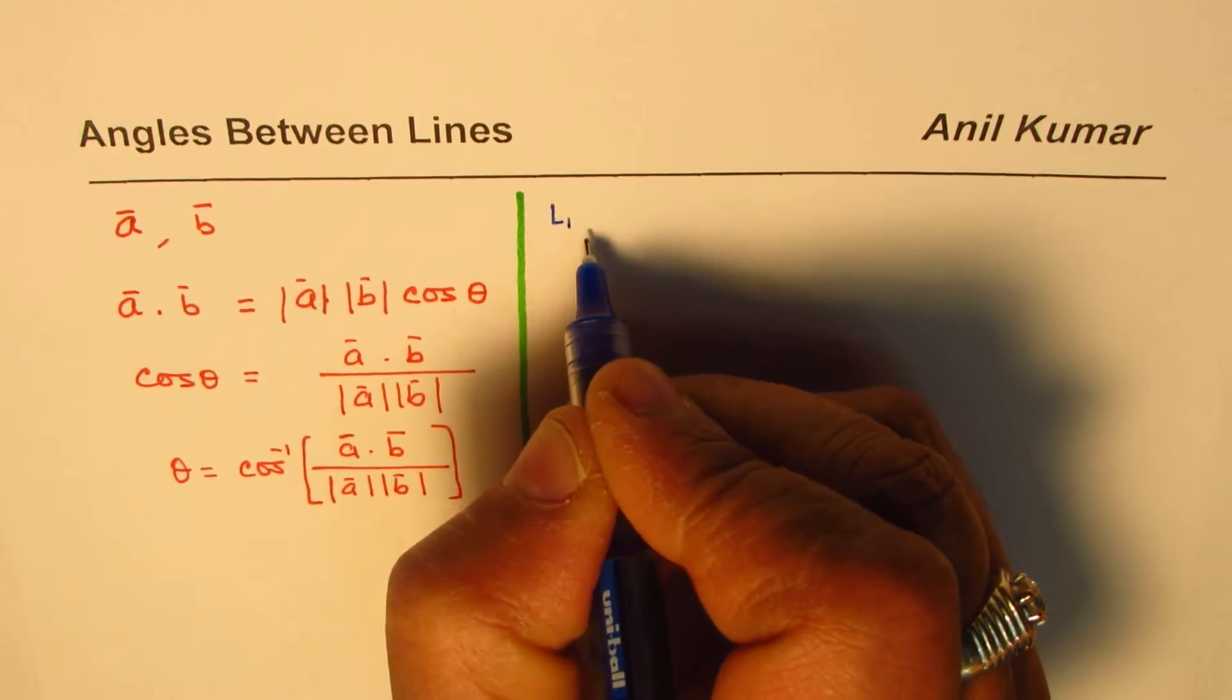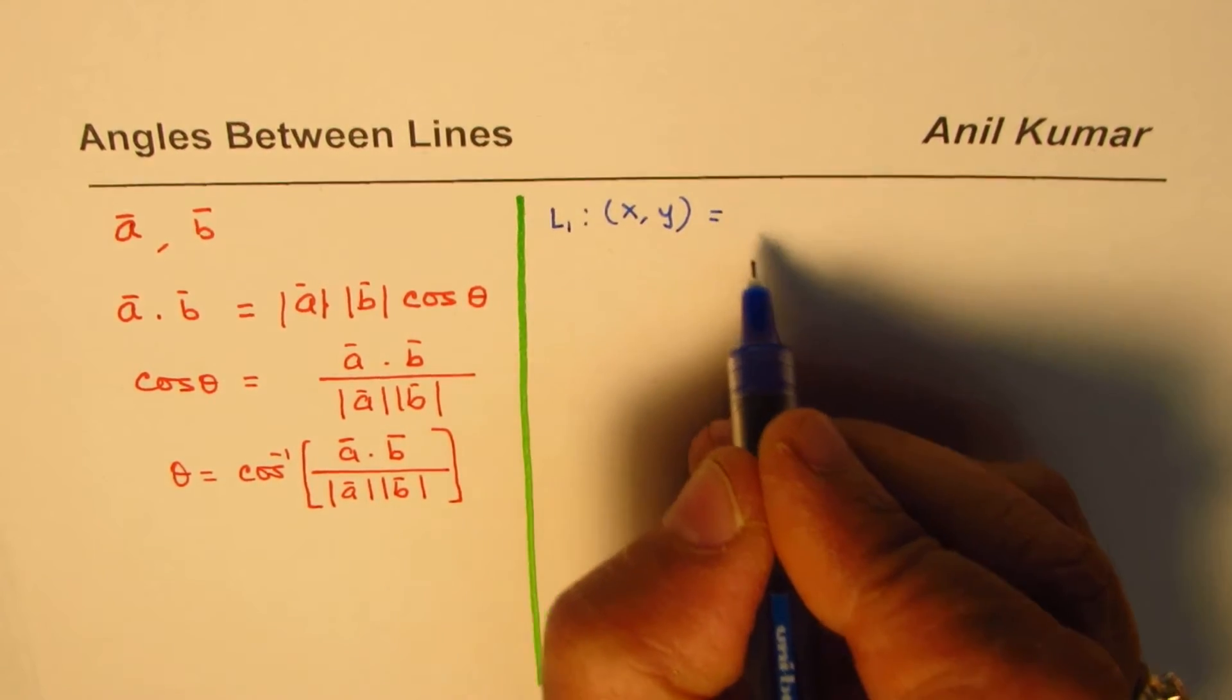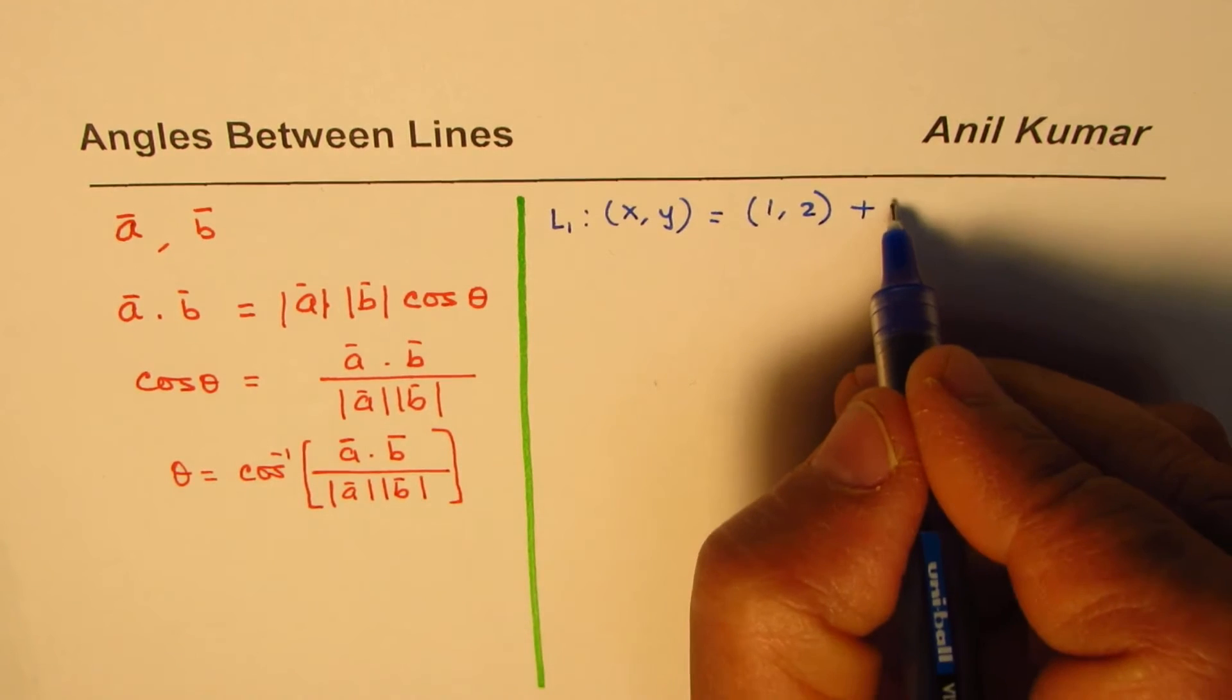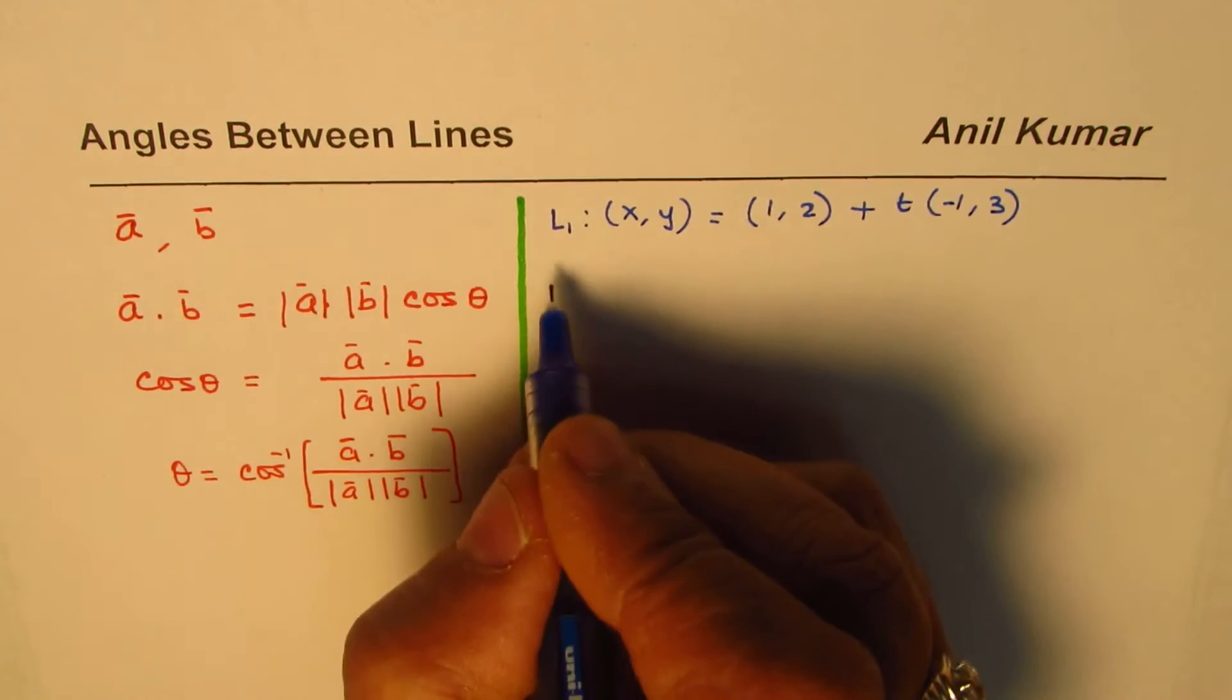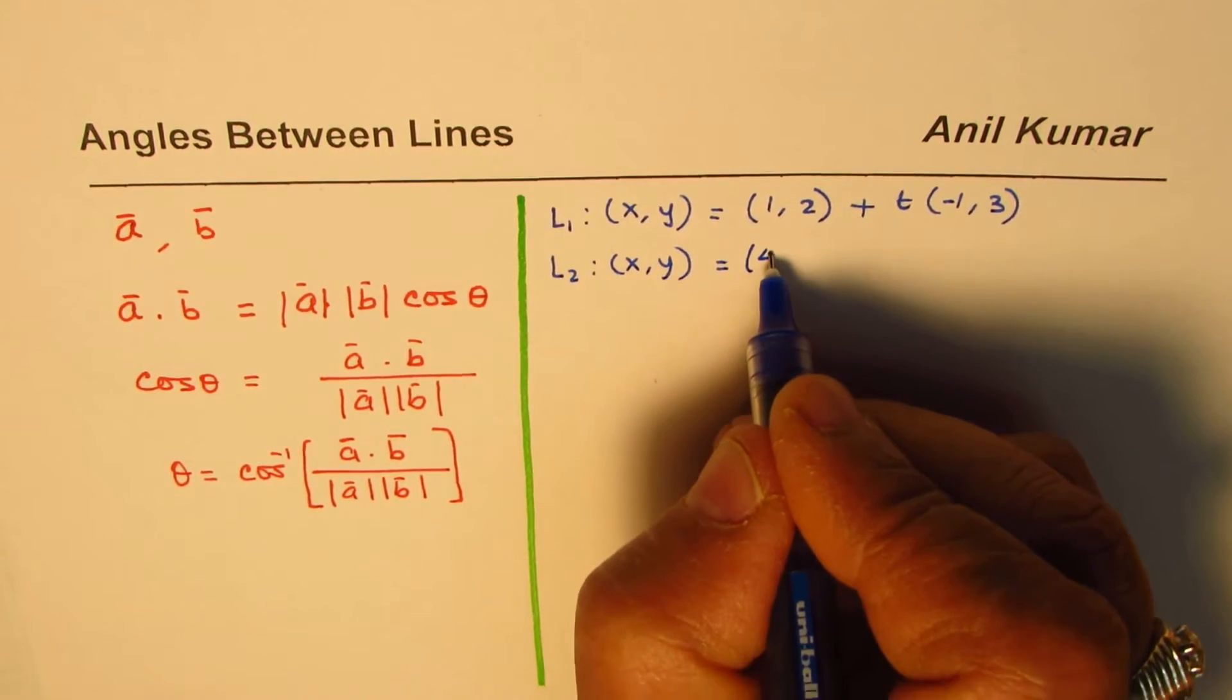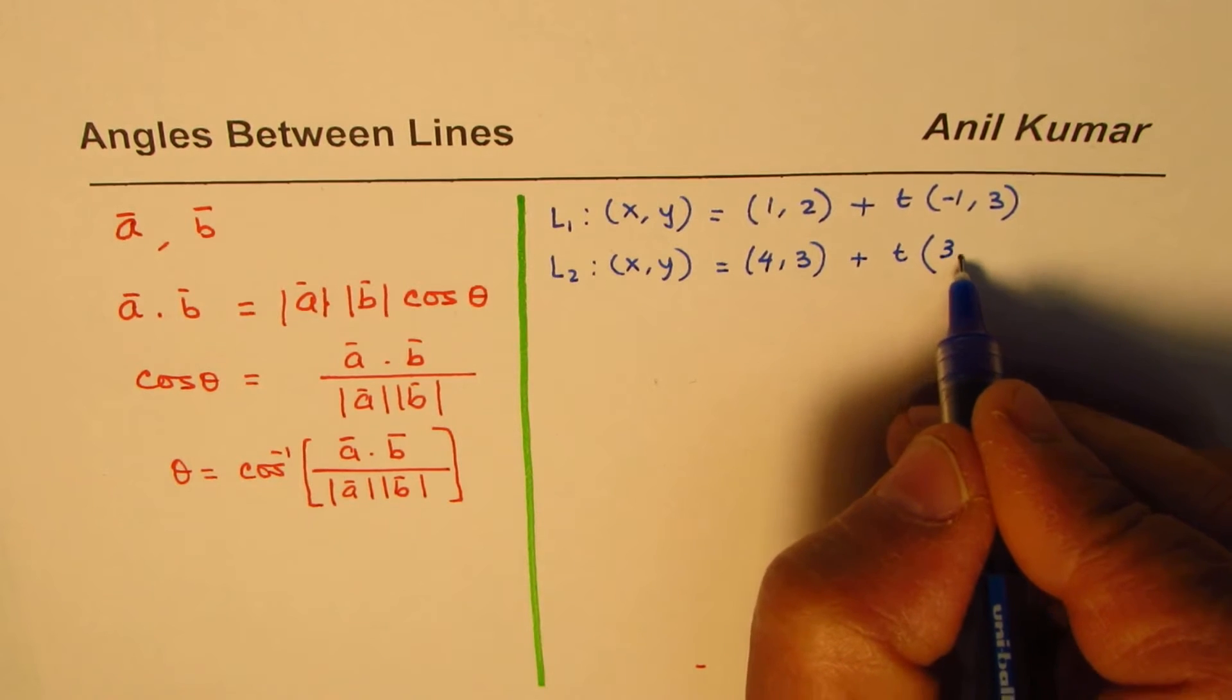Let's say we are given two lines in vector form. Line one could be represented as going through point (1, 2) plus a direction which is (-1, 3). The other line goes through the point (4, 3) and has the direction (3, 4).